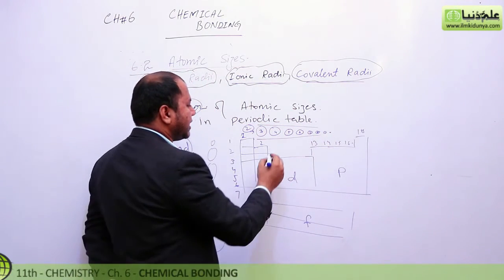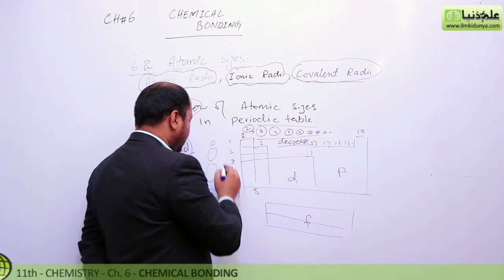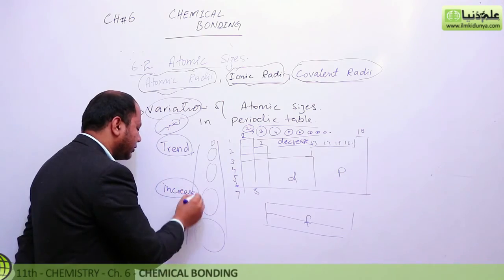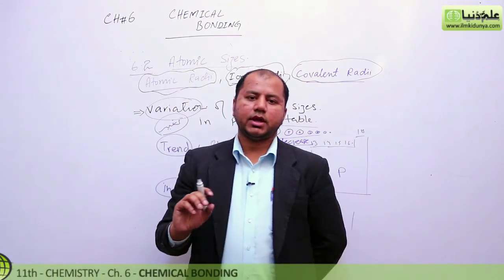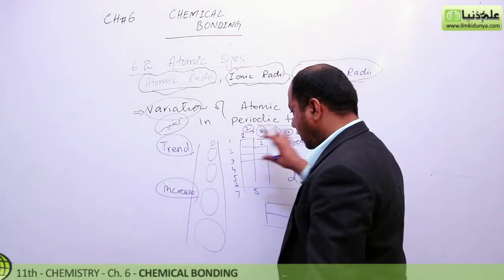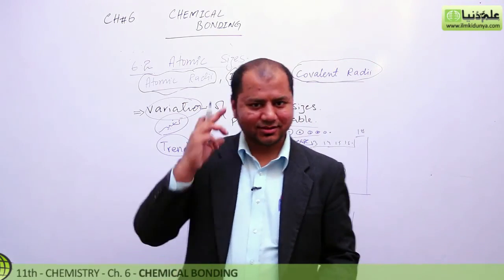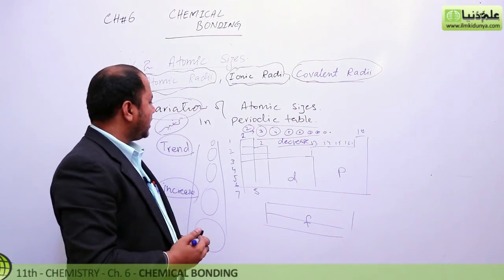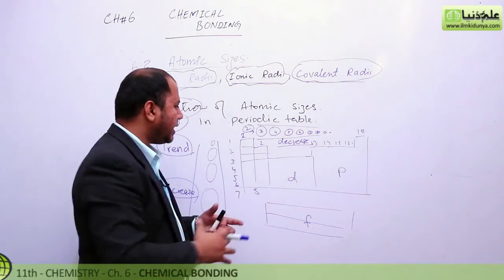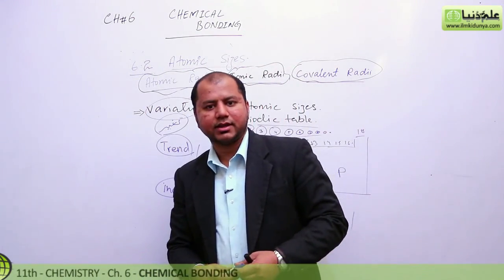So the summary for the periodic table is: in a period, atomic size decreases as you move left to right, and in a group, atomic size increases as you move top to bottom. This trend is very important to remember — it's a core concept. That is the variation of atomic sizes in the periodic table. For specific numerical values, you can refer to the periodic table directly. Thank you so much.